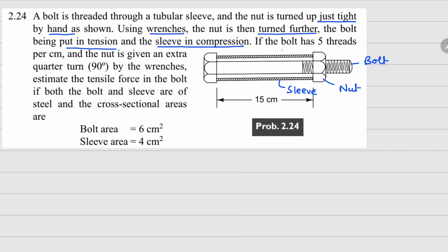The bolt has five threads per centimeter, meaning when we make five turns it moves by one centimeter. We are giving it only a quarter turn. If five turns equal one centimeter, then one quarter turn is going to be 1/4 times 1/5 centimeter, which equals 1/20 centimeter. This is the movement your nut is going to have.